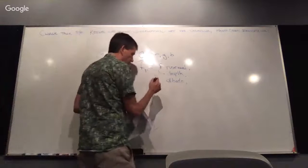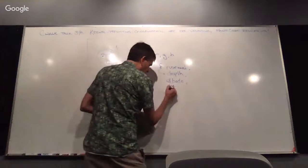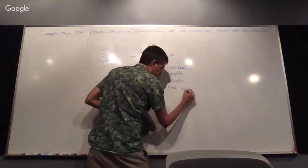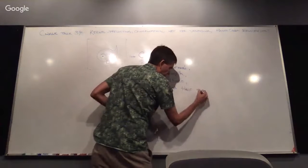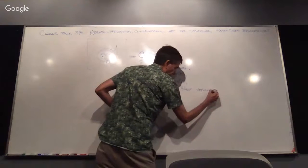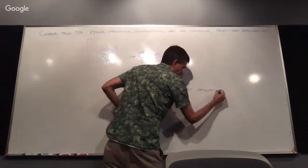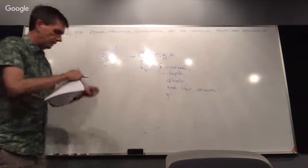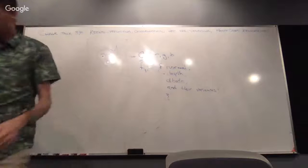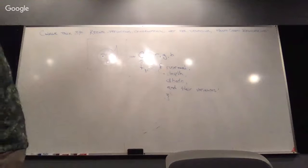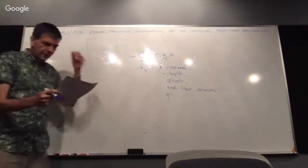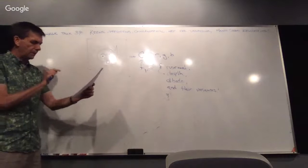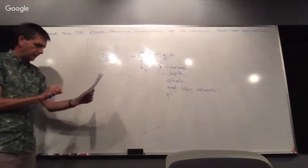So albedo is basically the reflectance — how much energy that goes in actually gets reflected out. Keep that in mind later on, because they do something to the data with albedo that makes a big difference. And also important: their variances. So what does that mean?